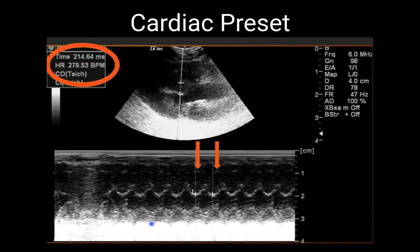The last step in getting the heart rate using the cardiac preset is to choose one cardiac cycle. To do that, put your caliper at one systole and extend it to the following systole — just one cardiac cycle. You can use two systoles or two diastoles; it doesn't matter, as long as it spans one full cardiac cycle. As soon as you confirm the caliper position, the machine gives you the fetal heart rate — in this case, 279 beats per minute, which would be extremely hard to obtain by subjective counting.